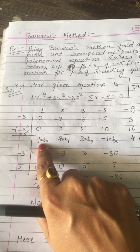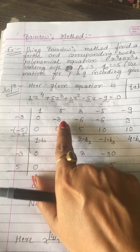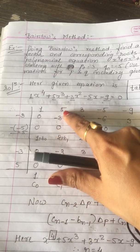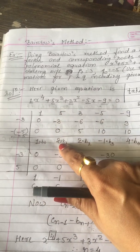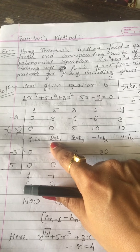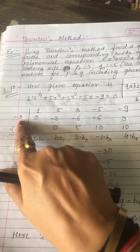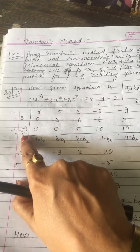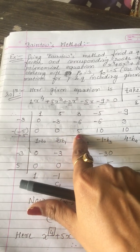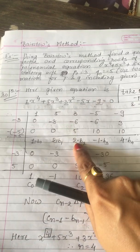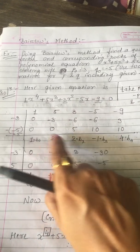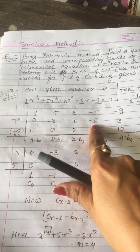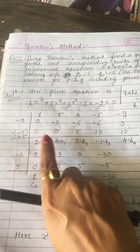Moving to next: minus 3 multiplied by 1 gives you minus 3 — place it over here; next should be 0. Now add 5 and minus 3, you get 2. That is B₁. In the next step, again multiply minus 3 by 2, that gives minus 6. Then 5 multiplied by 1 gives 5. Addition of these three gives you 2, which is B₂.